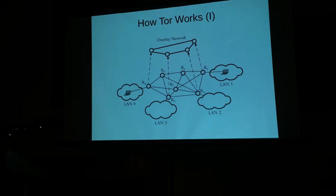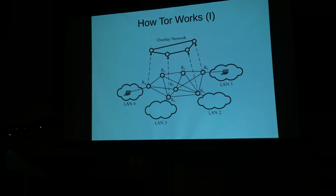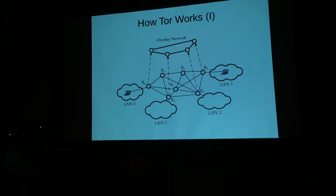Tor is first and foremost an overlay network. The concept in a nutshell is you have a network that sits on top of a network that gets to play by different rules. The bottom network is the IPv4 internet — the internet you're on all day, every day. The overlay network is different; it gets to behave by a different set of rules because it decides how it routes traffic. If you think an overlay network is strange, consider that a VPN is an overlay, a P2P network is typically an overlay, and hybrid cloud is an overlay too.